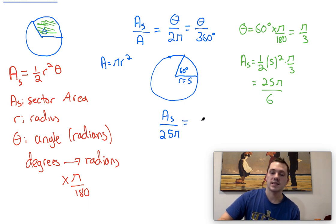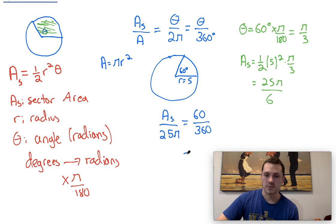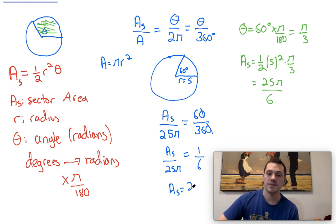And then we set this equal to the central angle, which is 60 degrees, divided by 360. So then we could reduce the right side, the zeros just cross. 6 over 36 is 1 sixth. And the area of the sector divided by 25 pi. We could just multiply the 25 pi up, and we would find that the area of the sector is equal to 25 pi over 6.